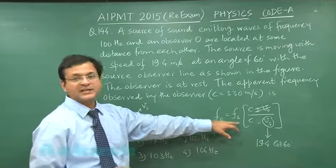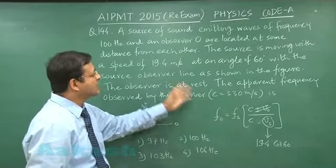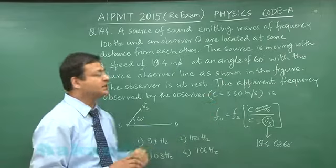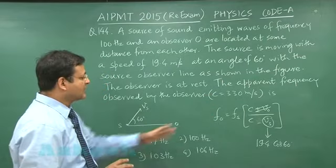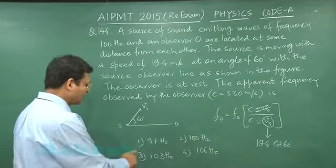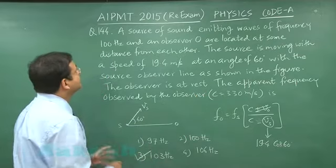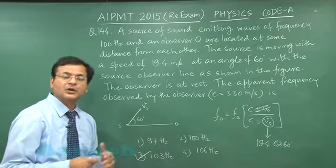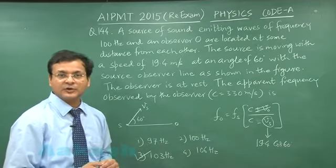The frequency of the source has been given to you as 100 hertz. The c value, speed of sound, has been given as 330 meter per second. So ultimately if you will do the calculations, the frequency observed will be coming out to be 103 hertz. And that will be the answer to this question 144. Now let us switch over to next question, that is 145.